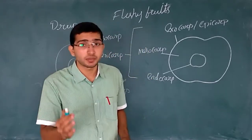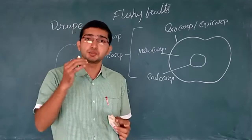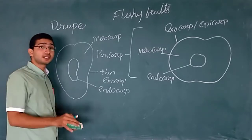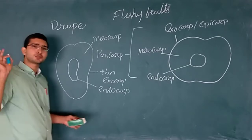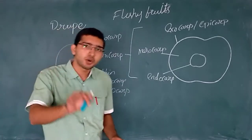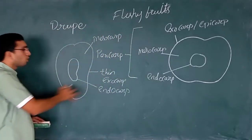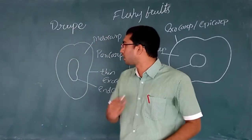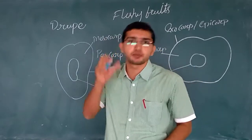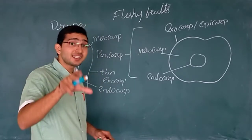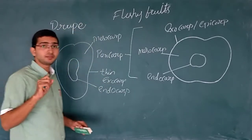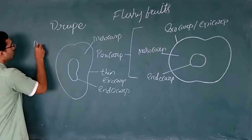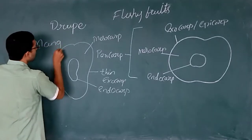In coconut, the endocarp is very hard and the mesocarp is fibrous — used for making rope — whereas in mango the mesocarp is fleshy. The outer exocarp is thin and protective. The mesocarp is fleshy in mango but fibrous in coconut, and the endocarp is monocarpellary and hard in nature. Drupes include mango and coconut.